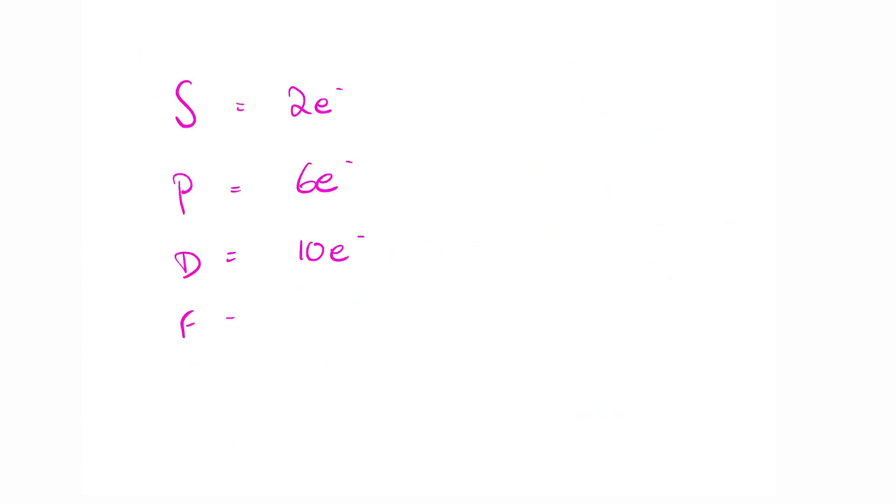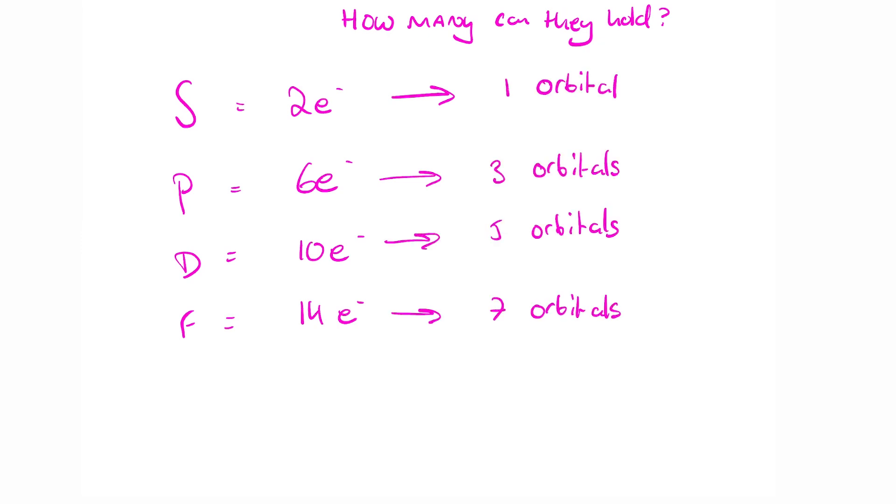An S subshell can hold two electrons, a P can hold 6, a D can hold 10 and F can hold 14. Why though? It's because these subshells are made up of something else. This is as deep as the iceberg goes. Orbitals.